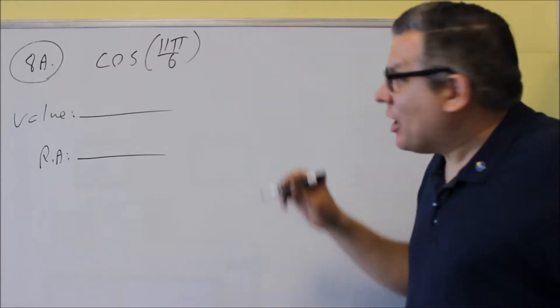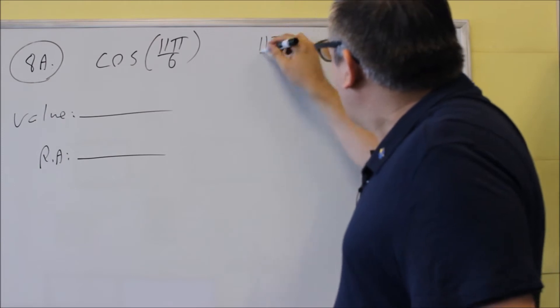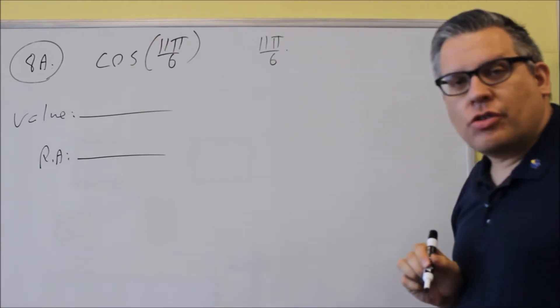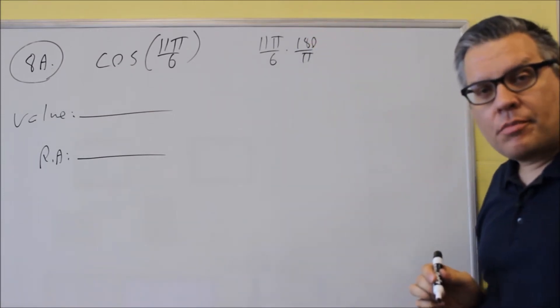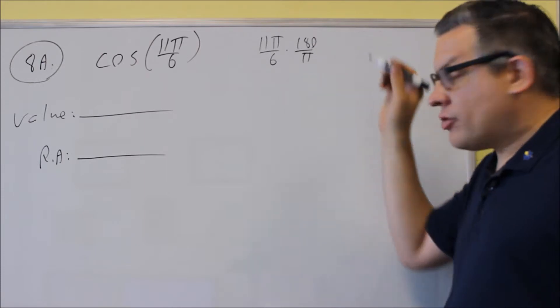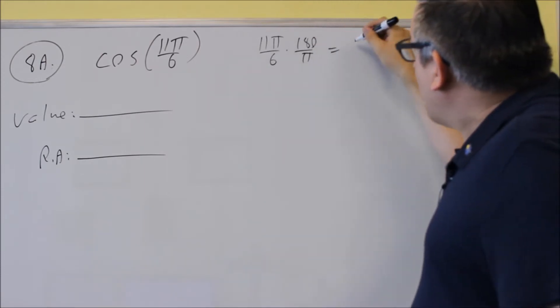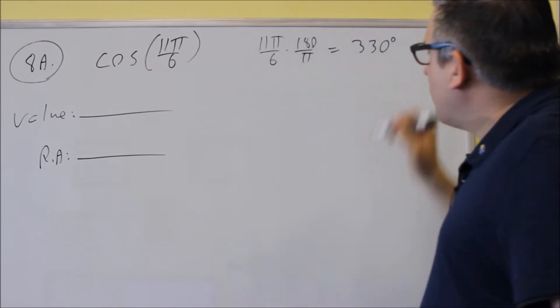If you don't want to work with 11 pi over 6, we can convert it over into degrees by the conversion factor, which is 180 over pi. So if we reduce all that, it's going to give you 330 degrees.